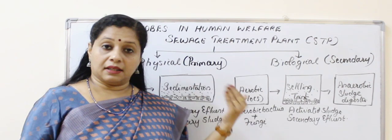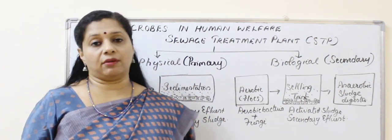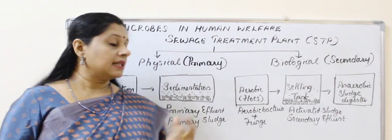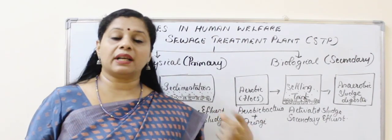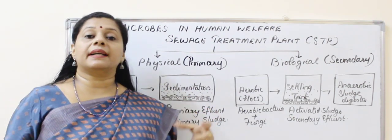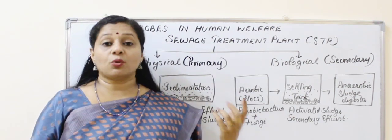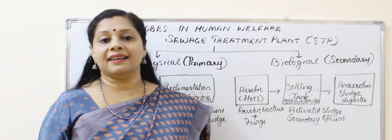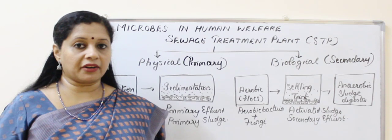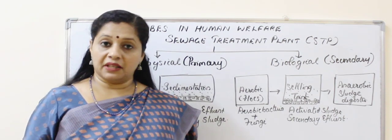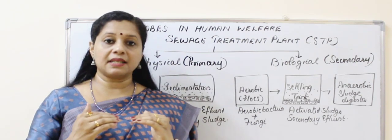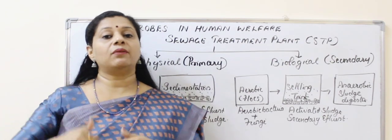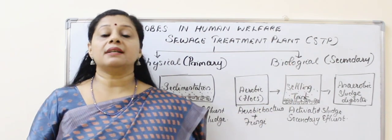At the same time, the water obtained above is called the primary effluent. Now what are we going to treat further — sludge or effluent? The effluent. Because the sludge we can dry and use as manure in the fields. The effluent is the water content that is going to be released into the nearby water body, so we have to make it less harmful. For that purpose, we take it from primary treatment to secondary treatment. In primary treatment it is only physical treatment — filtration and sedimentation. Primary sludge will be removed and used as manure, whereas primary effluent will be sent to the biological or secondary treatment.